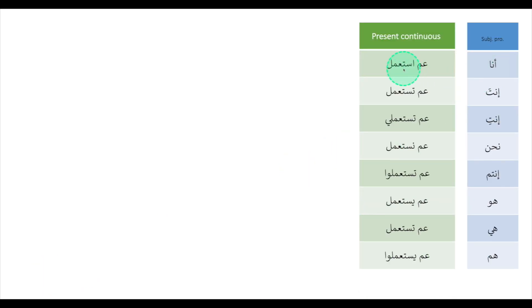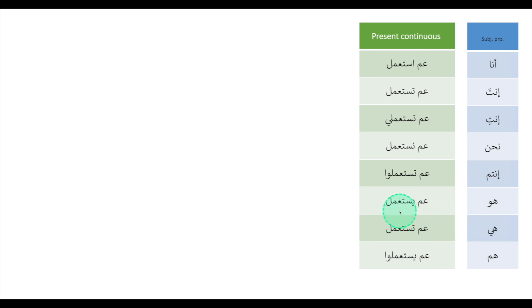أنا عم استعمل — I am using. أنت عم تستعمل. أنتِ عم تستعملي. نحنا عم نستعمل. أنتو عم تستعملوا. هو عم يستعمل. هي عم تستعمل. هن عم يستعملوا.